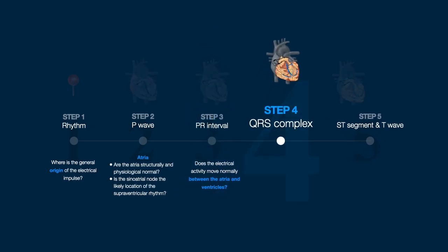Step 4: Describe the QRS complex. The QRS complex represents ventricular depolarization, and therefore upon review of the complex, can identify structural and physiological abnormalities at the level of the ventricles, such as ventricular hypertrophy, bundle branch blocks, and fascicular blocks. The question to be addressed during this step is: Are the ventricles structurally and physiologically normal?